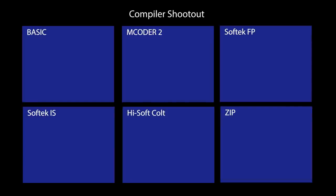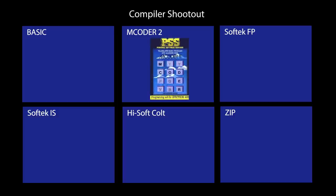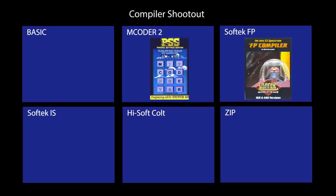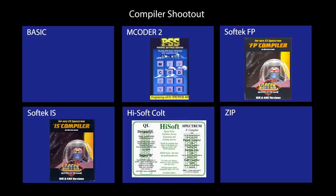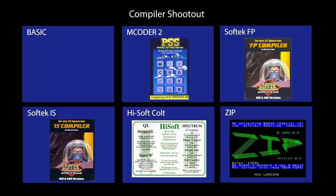In this experiment we're going to put several compilers up against each other. I've created a few simple tests, run them in BASIC to get the timings, then compile each one and rerun the tests. As we move along, the BASIC code will get more complex. The compilers are: mCode2 from PSS (1983, $9.95), SoftTech FP floating point compiler (1983, $19.95), SoftTech IS integer compiler (1983, $19.95), HiSoft Colt compiler (1985, $12.95), and ZIP compiler, initially released by Your Spectrum magazine.